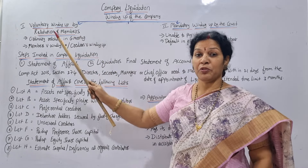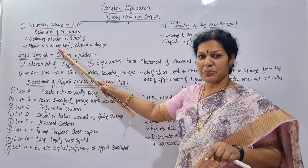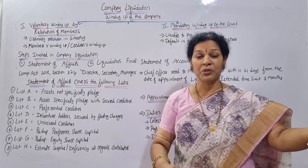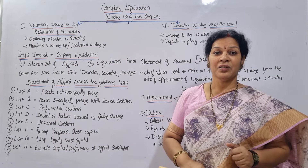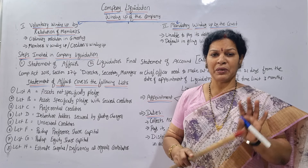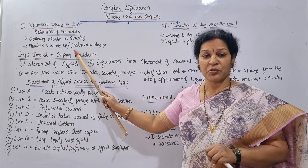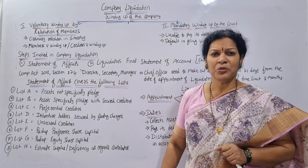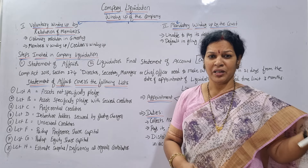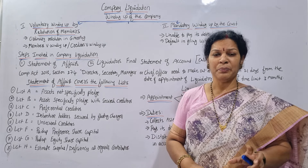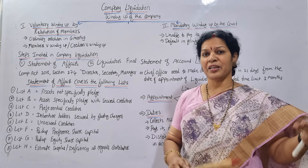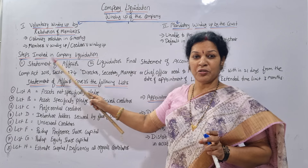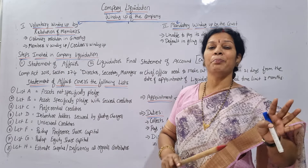This voluntary winding up can be through members — members' voluntary winding up — or creditors' voluntary winding up. Creditors means those who have given a loan to the company or whose money is involved in the company's activities. Members can wind up voluntarily, or creditors can also voluntarily wind up the company where their payments are not proper and the company is not in a position to pay. In such cases they can come to one conclusion in a general meeting.